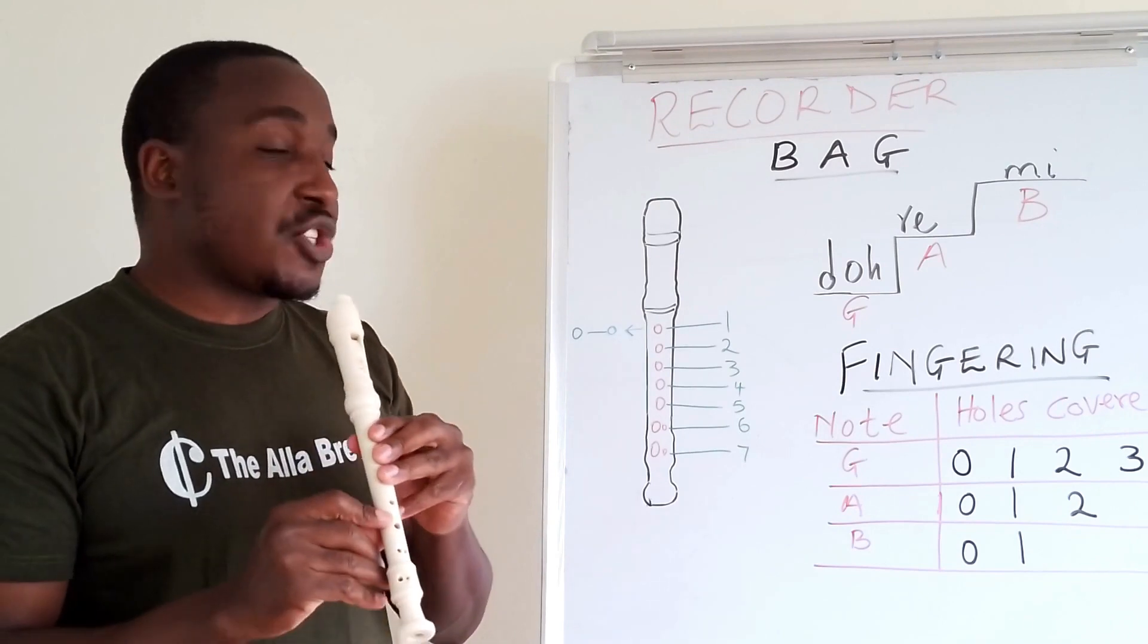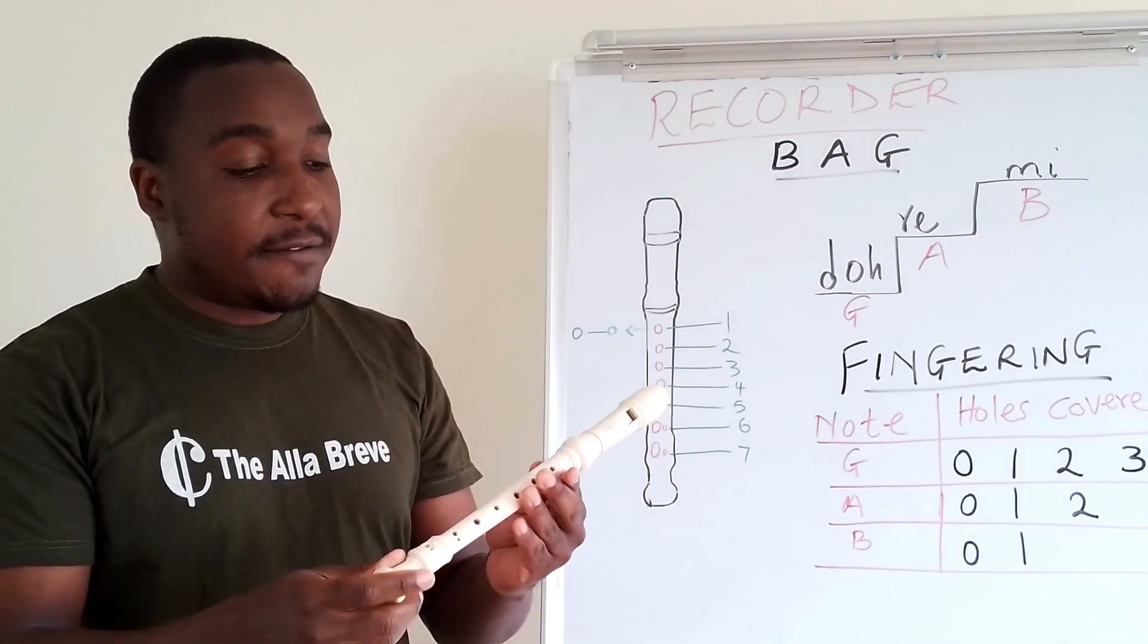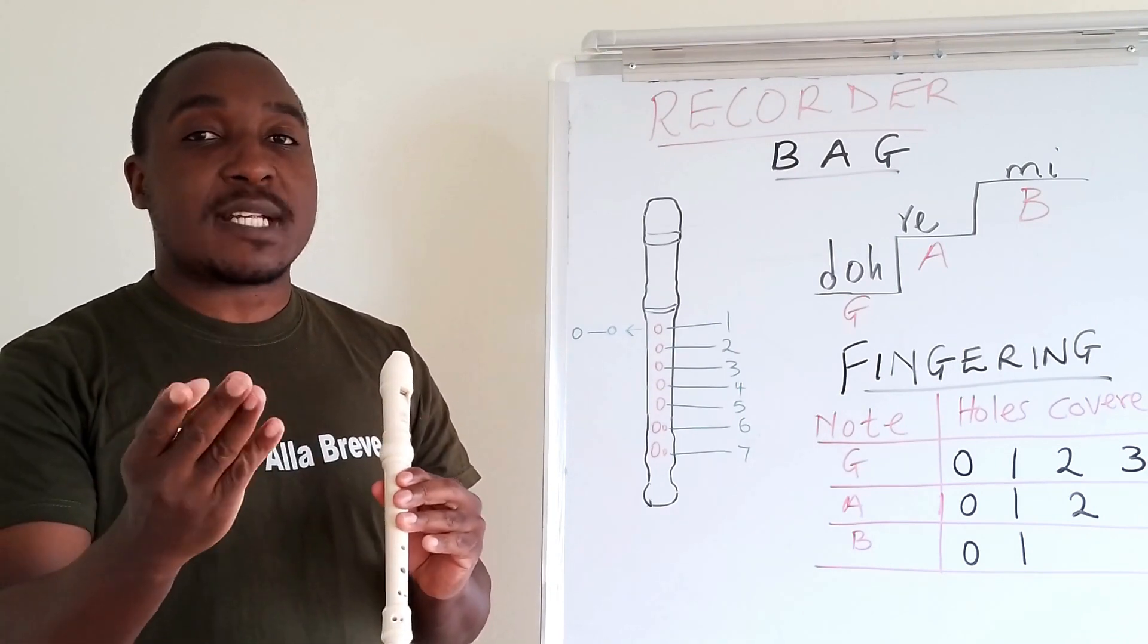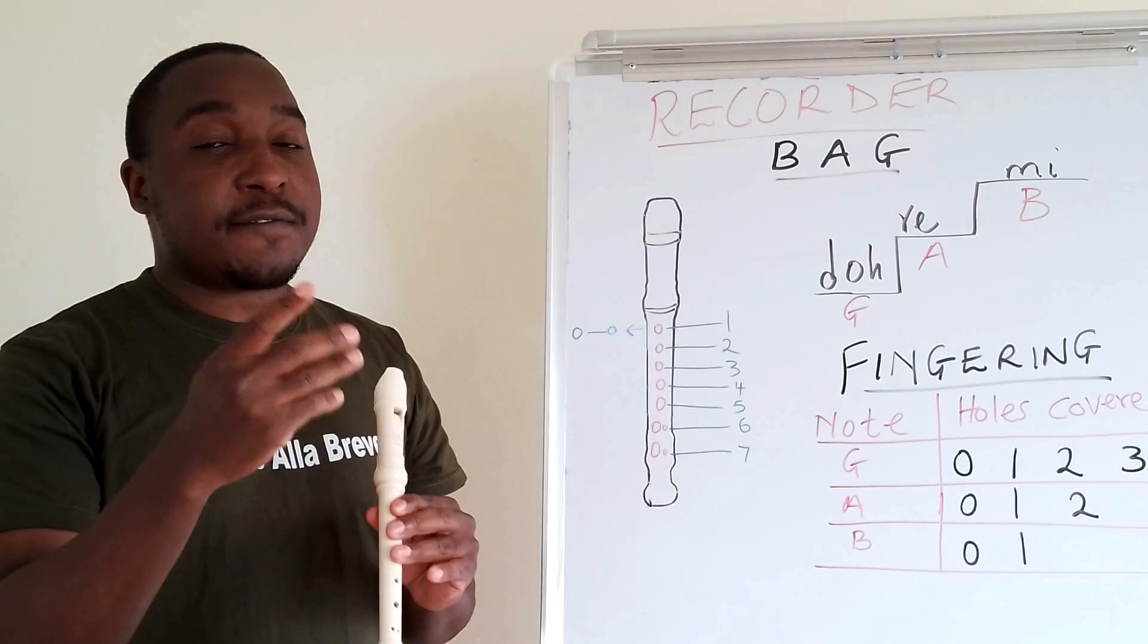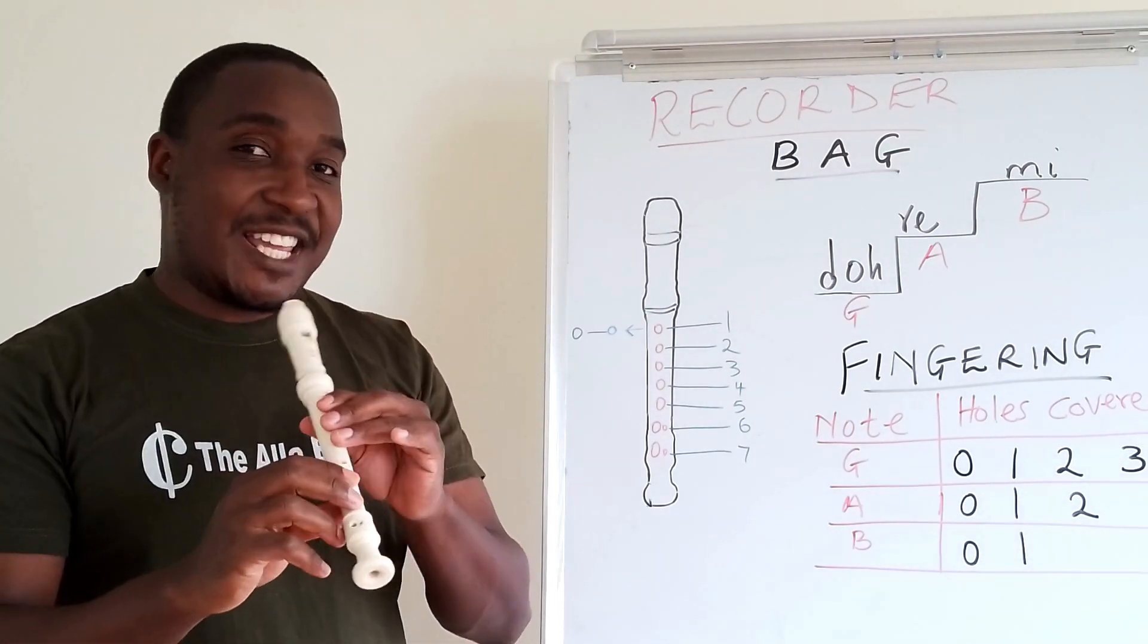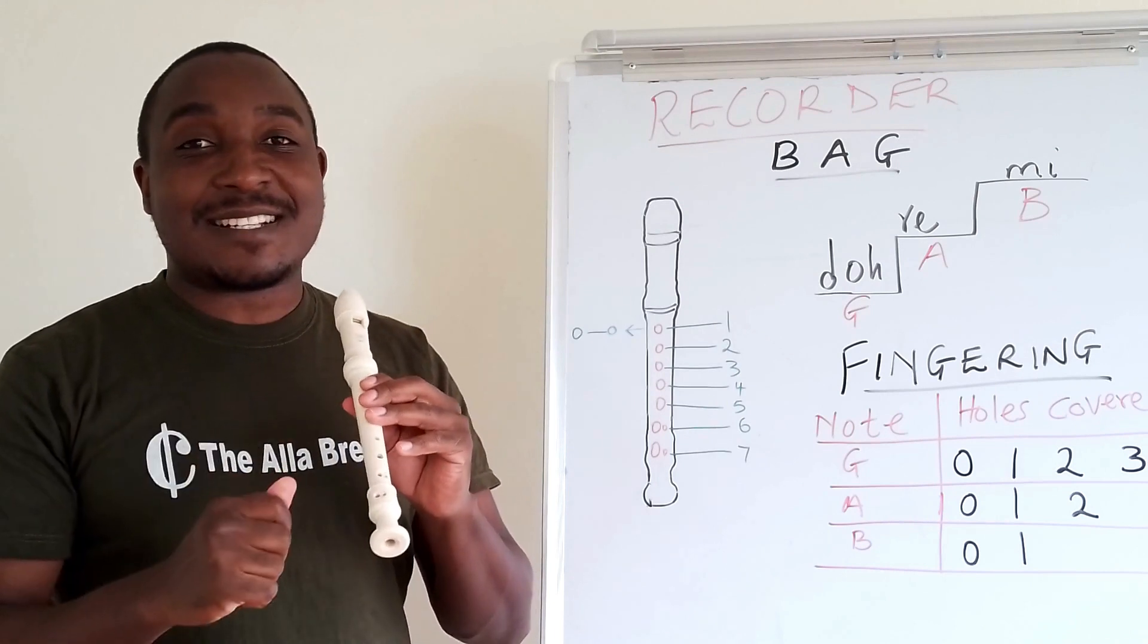Here is an example. We start with G. And you can have your recorder in position. So, we play together. We play G four times, A four times, and B four times. Are you ready? Good. Let's start.